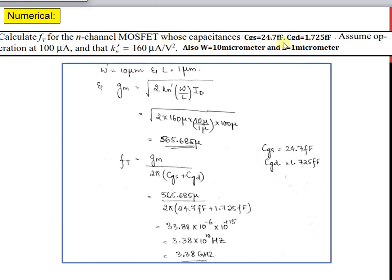The question asks us to calculate the unity gain frequency FT for an n-channel MOSFET with specified capacitances CGS and CGD. Assume operation at 100 microamps with k prime equals 160 microamps per volt squared, width W equals 10 micrometers, and length L equals 1 micrometer. The values of W, L, CGS, and CGD are noted down.